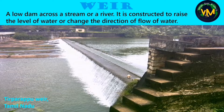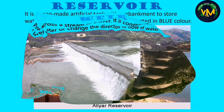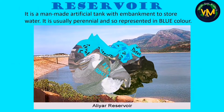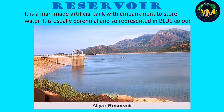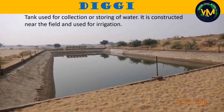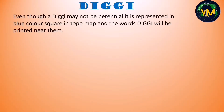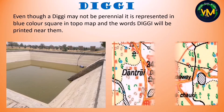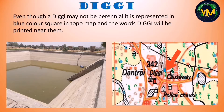We have some more symbols related to irrigation. First is reservoir — it is a man-made artificial tank with an embankment to store water. It is usually perennial and so it is represented in blue. This is a picture of Aliyar reservoir. Next is diggi — a new symbol in our topo map. It is a tank used for collection or storage of water, constructed near the field for irrigation. Even though a diggi may not be perennial, it is represented in blue color squares in the topographical map, with the word 'diggi' printed near them.